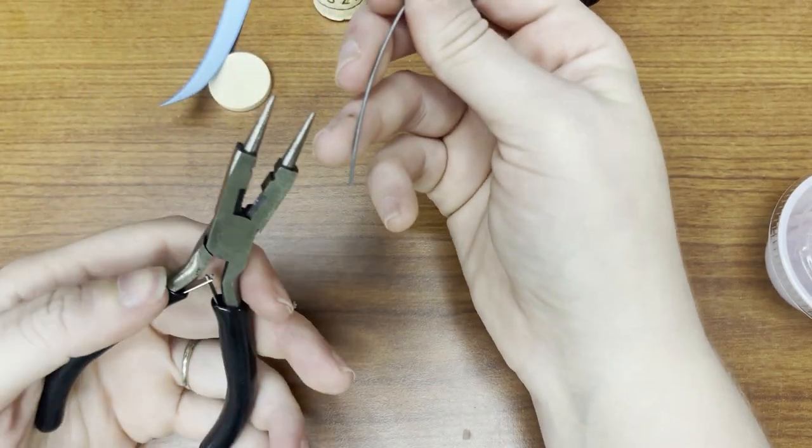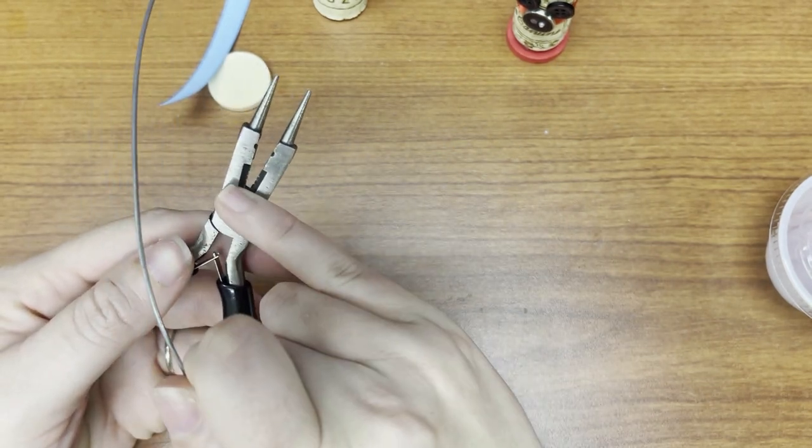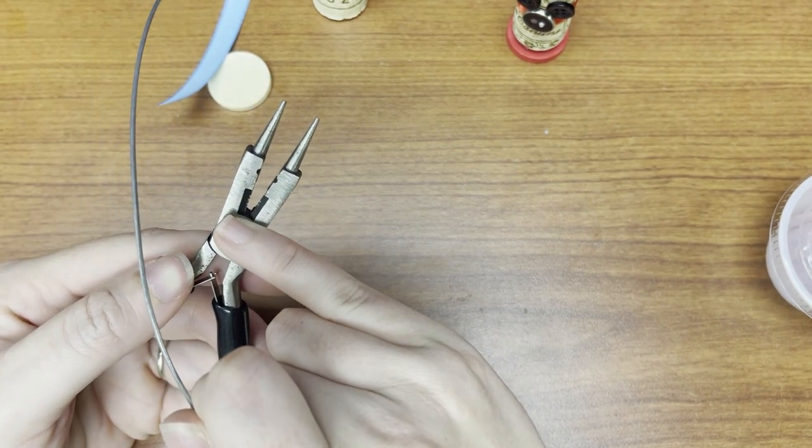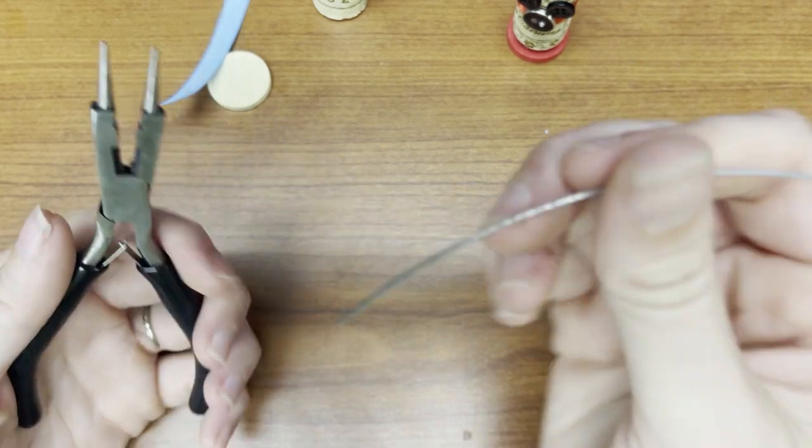And if you have a pair of pliers at home, inside all pairs of pliers are a wire cutter, so you can cut your wire at the very end and then you can use the point of your pliers to twist the wire.